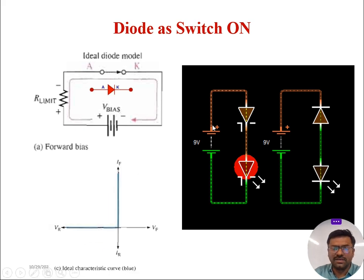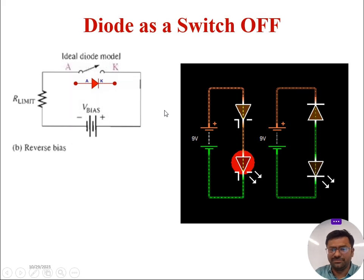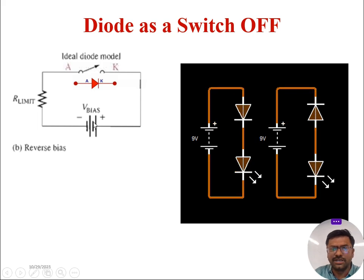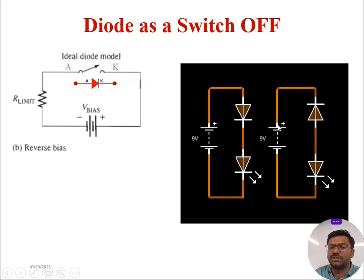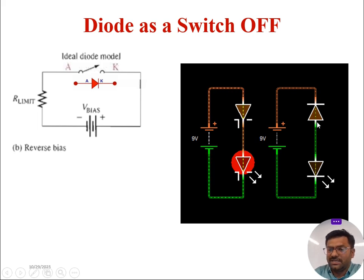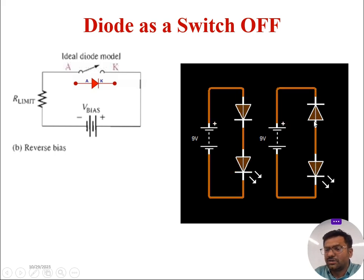Now you can observe diode as a switch in the off condition. You can see the terminals: the anode terminal of the diode is connected to the negative terminal of the battery and cathode terminal of the diode is connected to the positive terminal of the battery, as a part of which this diode goes to reverse bias, which implies it is a switch-off condition of the diode. This negative terminal or the cathode terminal of the P-N junction diode is connected to positive terminal of the battery. So this diode is in off condition, as a part of which there is no current flowing through the LED. The LED is indicating that the diode is in off condition.